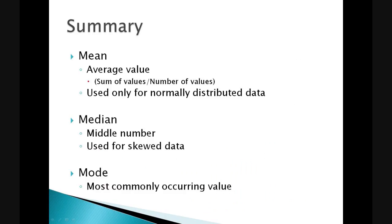In summary, the mean is the average value. It can be calculated by the total sum of the values divided by the number of the values. We should only use this for normally distributed data. Median on the other hand is the middle value and can be used more appropriately for skewed datasets. Mode, finally, is the most commonly occurring value within our dataset.